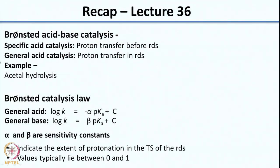We looked at the example of acetal hydrolysis to see in which cases you observe specific acid catalysis versus general acid catalysis. We also looked at how you can correlate the rates of reactions following general catalysis with the pKa — this is called the Bronsted catalysis law. For a general acid, log K is given by minus alpha pKa plus C, whereas for a general base, log K is given by beta pKa plus C.